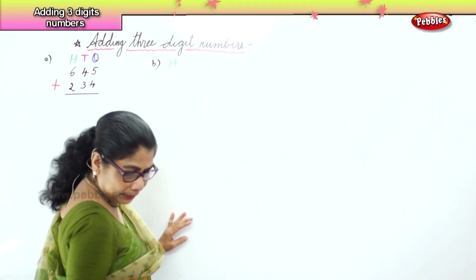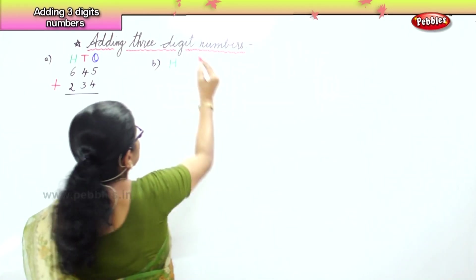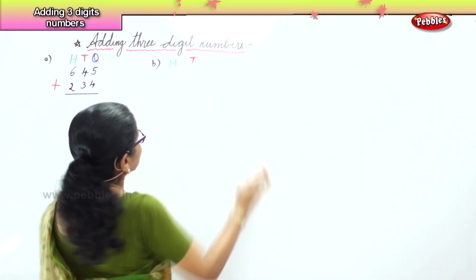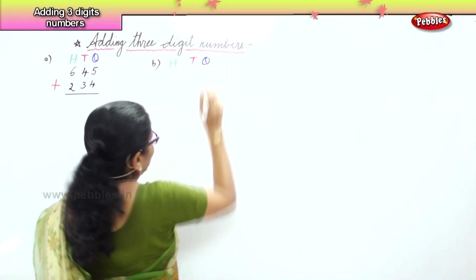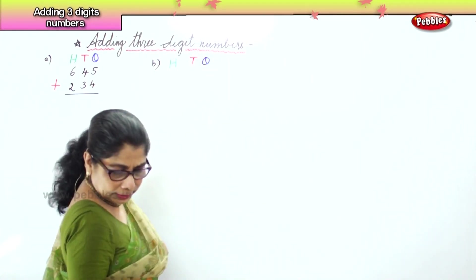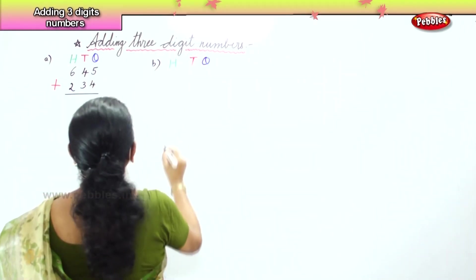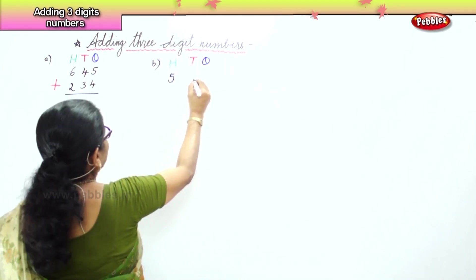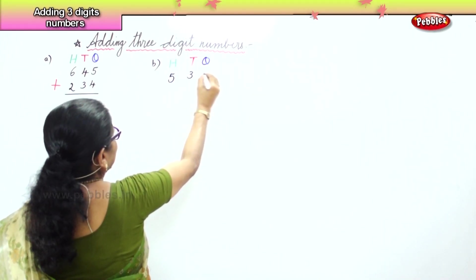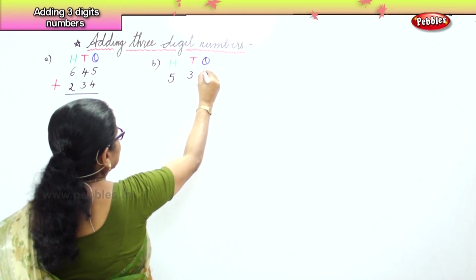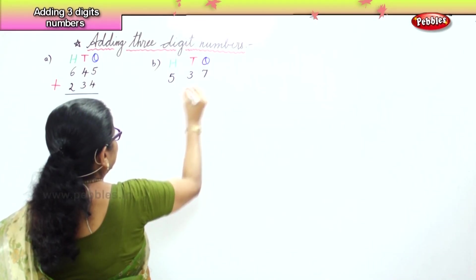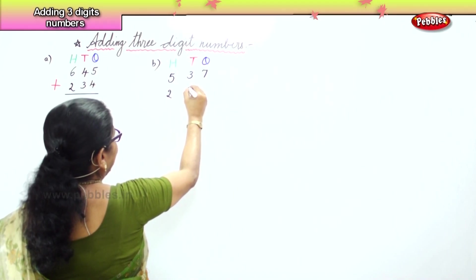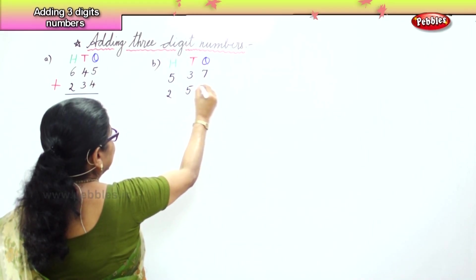Hundreds, tens, and ones. Here you have: five hundred and thirty-seven, and two hundred and fifty-two.